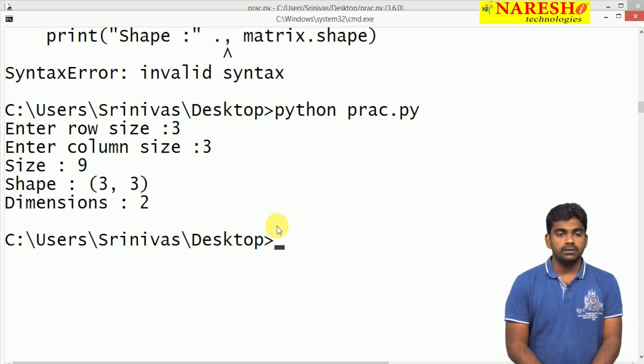Total three times three - the size is nine. The shape shows clearly three by three, and the dimensions are two.